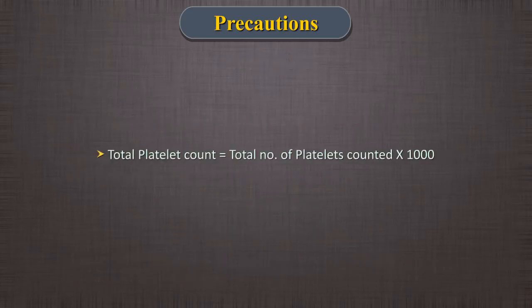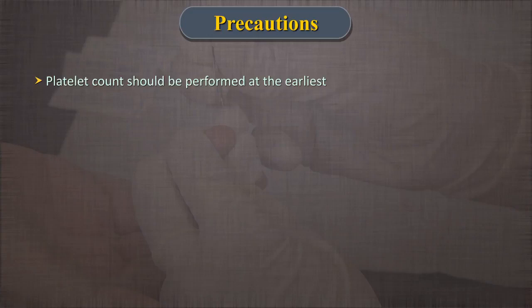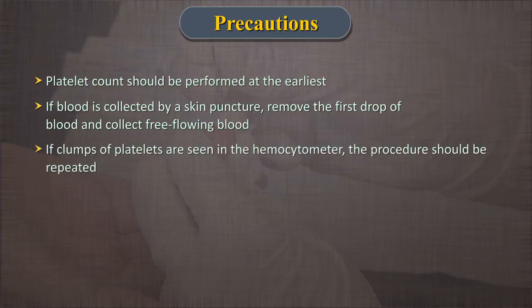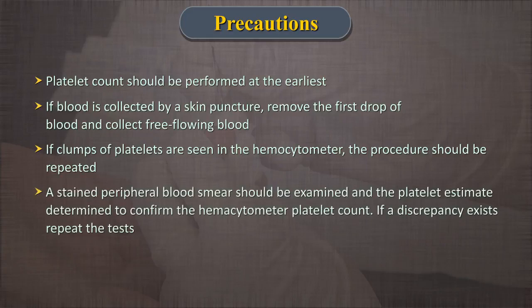Thus, you will get the total platelet count by multiplying the total number of platelets counted by 1000. Things to take care of to avoid error: 1. Platelet counts should be performed at the earliest. 2. If blood is collected by skin puncture, carefully remove the first drop of blood and collect the free-flowing blood for the platelet count; this will minimise platelet clumping and adhesion to the puncture site. 3. If clumps of platelets are seen in the hemocytometer, the procedure should be repeated — clumps may be due to inadequate mixing or poor technique. 4. A stained peripheral blood smear should be examined and the platelet estimate determined to confirm the hemocytometer platelet count; the platelet estimate should correlate with the platelet count.